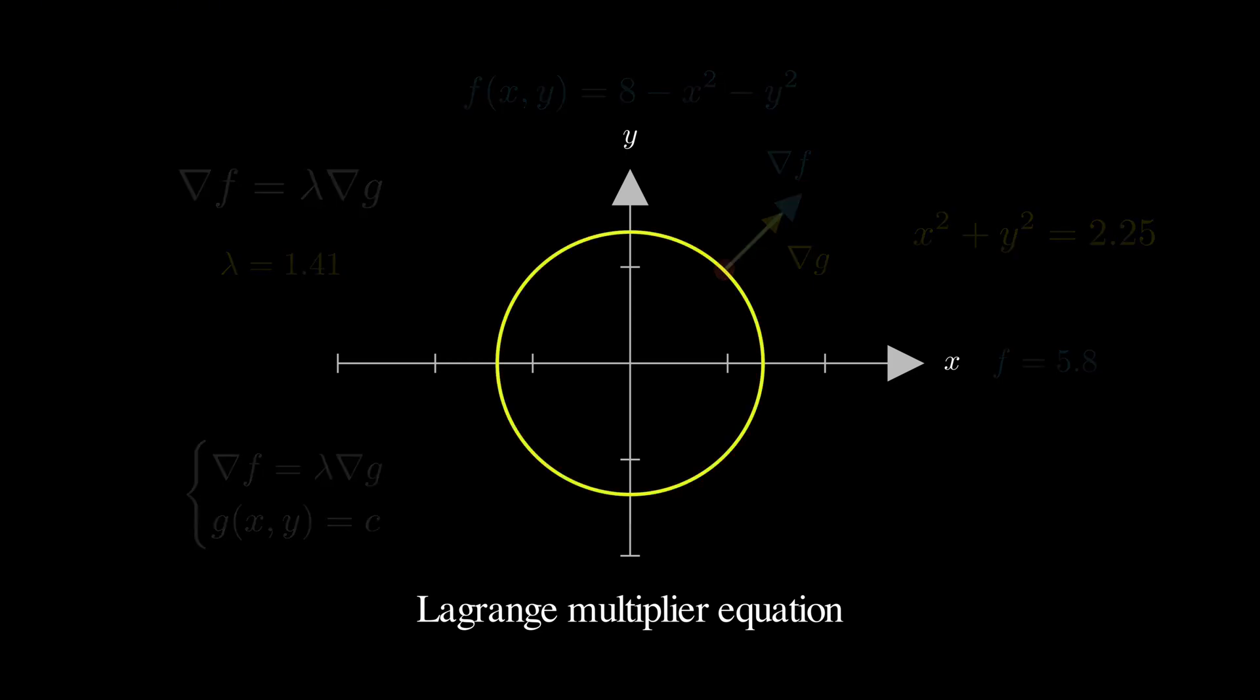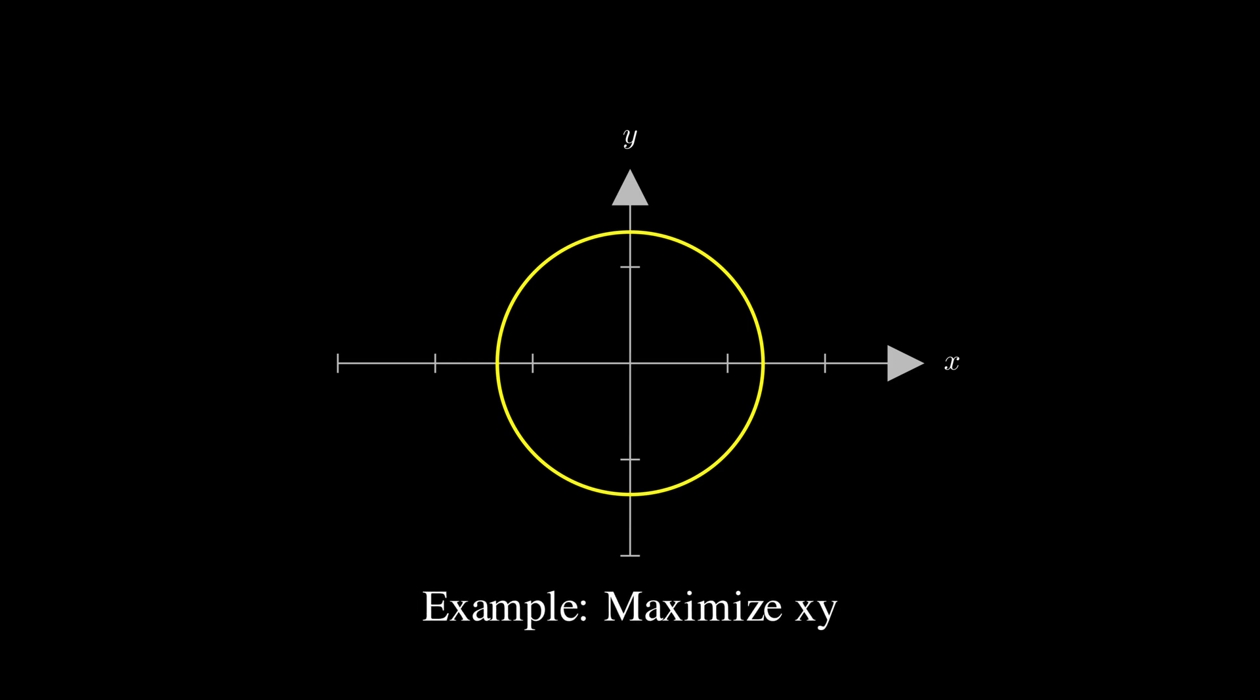Let me show you how this works with a different example. Suppose we want to maximize the product x times y subject to the constraint that x squared plus y squared equals 1, so we are looking for points on the unit circle.